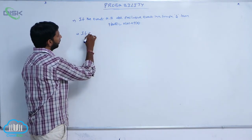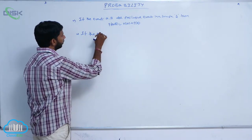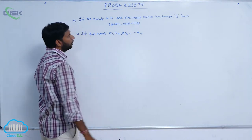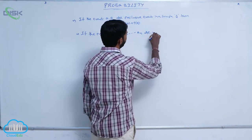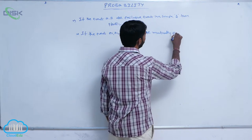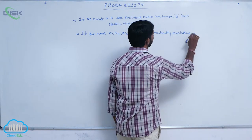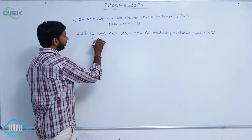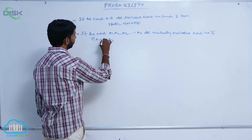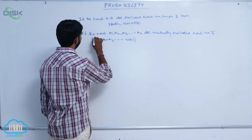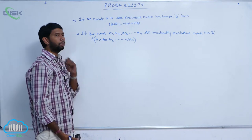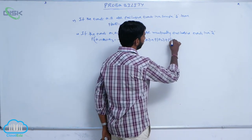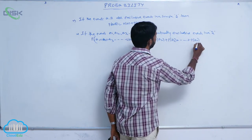If the events A1, A2, A3 and so on An are mutually exclusive events in a sample space S, then P of A1 union A2 union A3 and so on union An is equal to P of A1 plus P of A2 plus P of A3 plus and so on plus P of An.